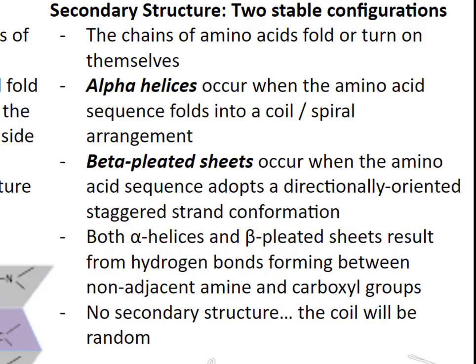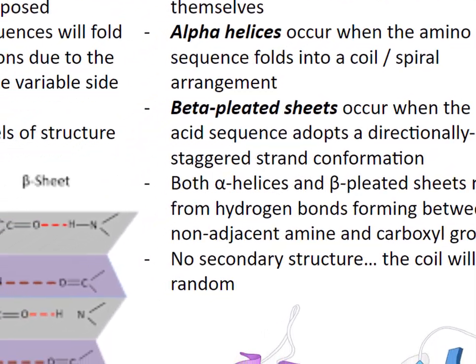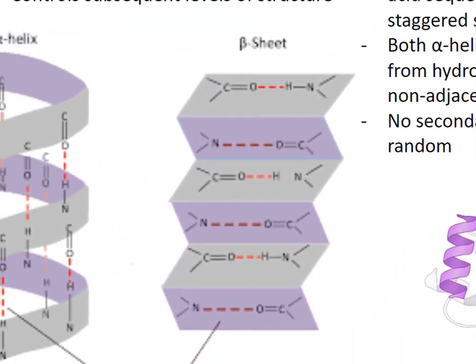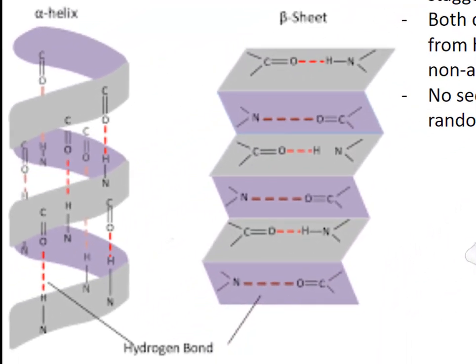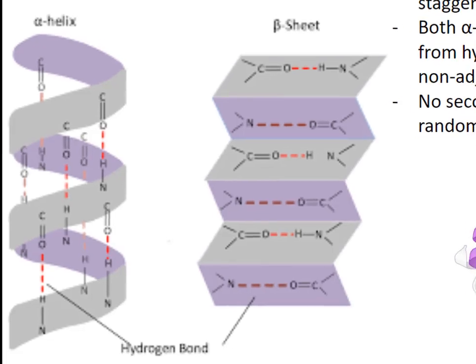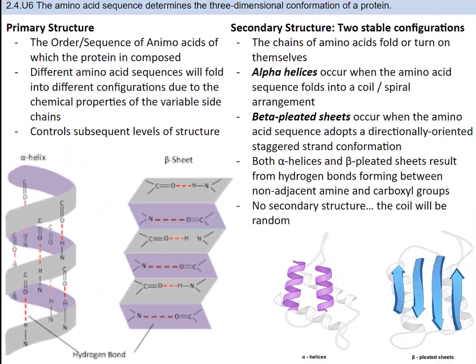The amino acid sequences will commonly fold into two stable configurations called secondary structures. Alpha helices occur when the amino acid sequence folds into a coil/spiral arrangement. Beta-pleated sheets occur when the amino acid sequence adopts a directionally-oriented staggered strand conformation. Both alpha helices and beta-pleated sheets result from hydrogen bonds forming between non-adjacent amine and carboxyl groups. When no secondary structure exists, the polypeptide chain will form a random coil conformation. You can see in the images an alpha helix, like a coil, and a beta-pleated sheet, like a folded sheet of paper.